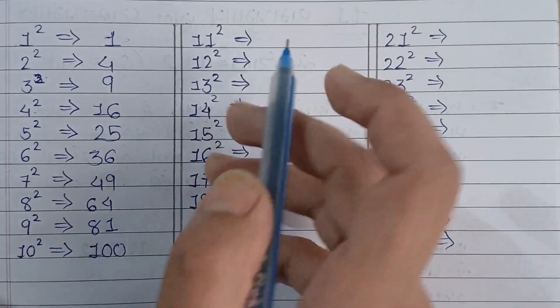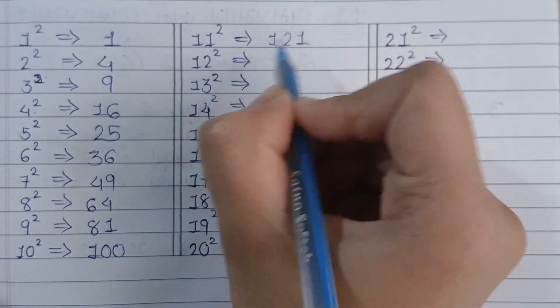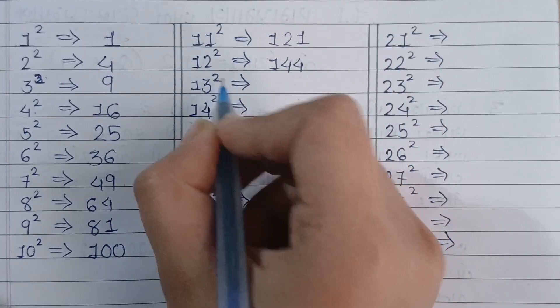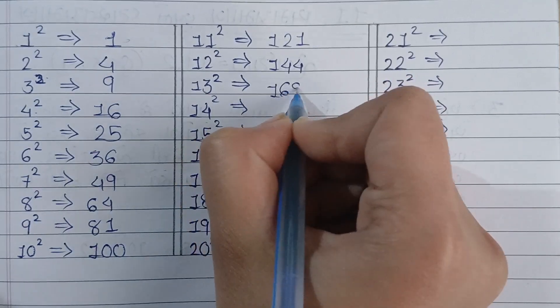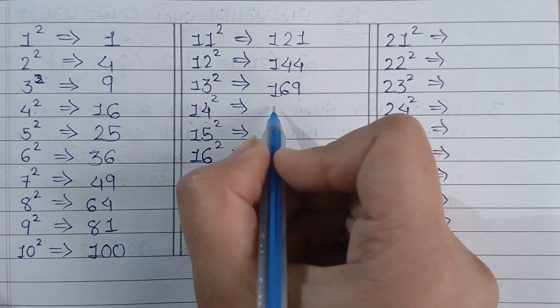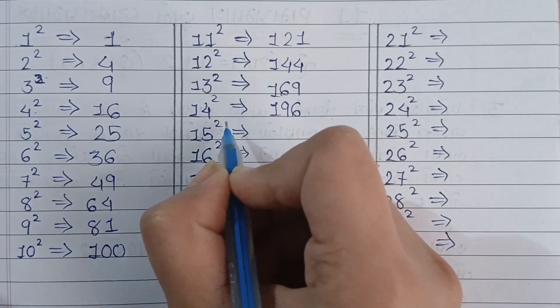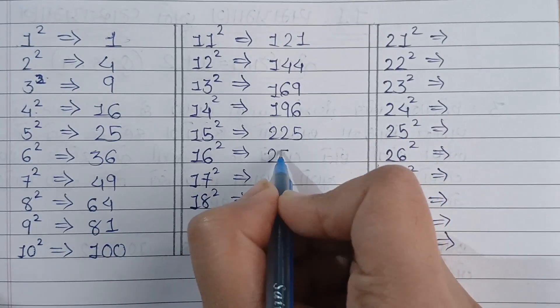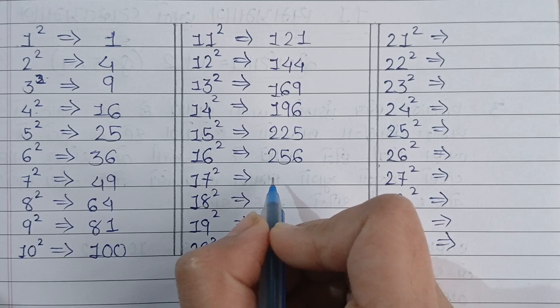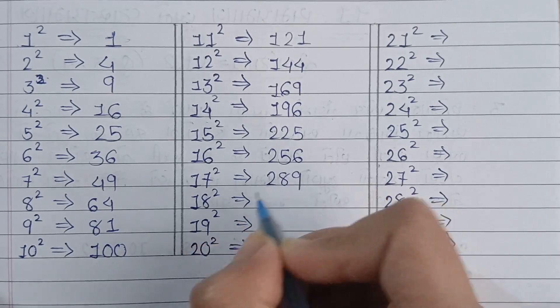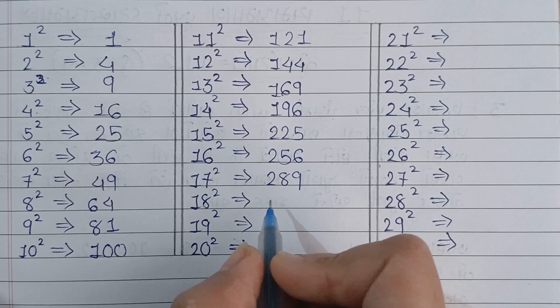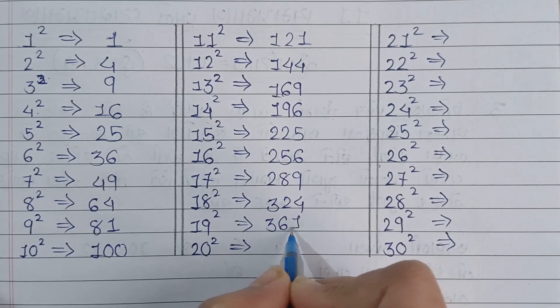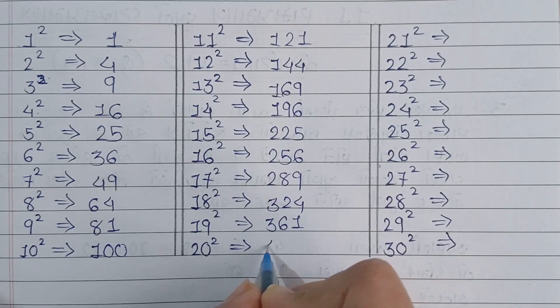Now, 11 square is equal to 121, 12 square is equal to 144. And 13 square is equal to 169, 14 square is equal to 196, 15 square is equal to 225, 16 square is equal to 256, 17 square is equal to 289, 18 square is equal to 324. Then, 19 square is equal to 361, 20 square is equal to 400.